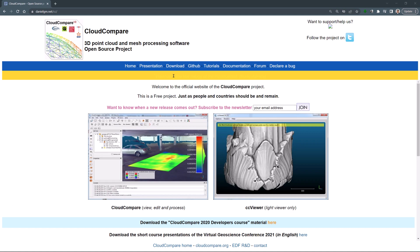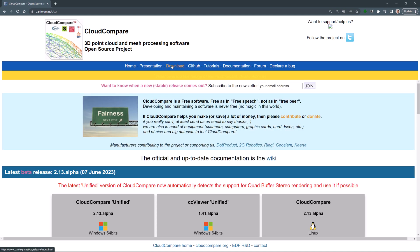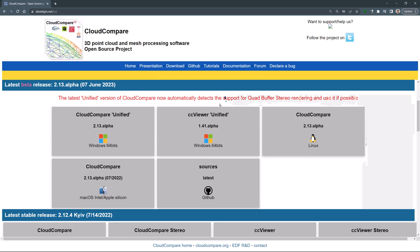Firstly, ensure that you have the latest version of CloudCompare, specifically the June 2023 release. You can download it from the official CloudCompare website, and the installation process is straightforward, similar to previous installations.